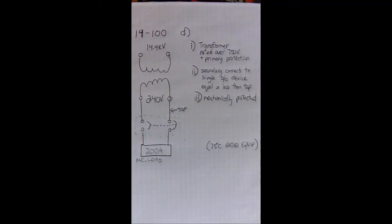Hi, welcome to a lesson on 14-100 item D. I'm going to start with reading the code out of the code book. So it says where the top conductor forms part of the only circuit supplied from a power or distribution transformer rated over 750 volts with primary protection in accordance to rules 26-250.